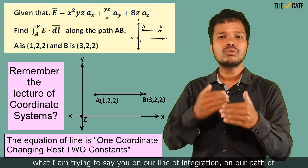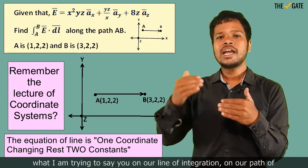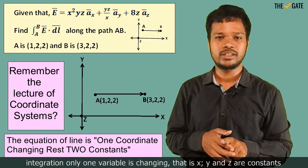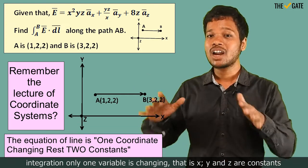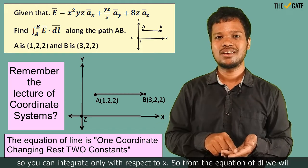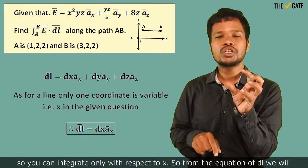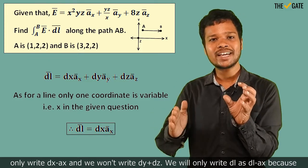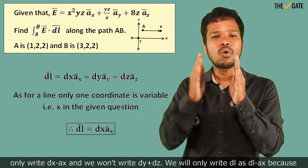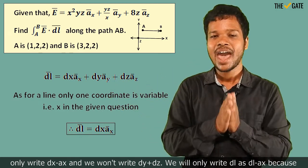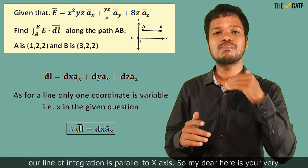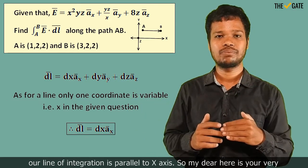So what I am trying to say is: on our line of integration, on our path of integration, only one variable is changing—that is x. y and z are constants, so you can integrate only with respect to x. So from the equation of dl, we will only write dx ax and we won't write dy plus dz. We will only write dl as dx ax because our line of integration is parallel to the x-axis.